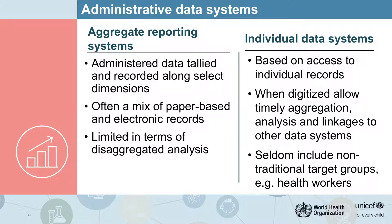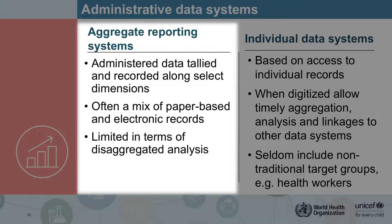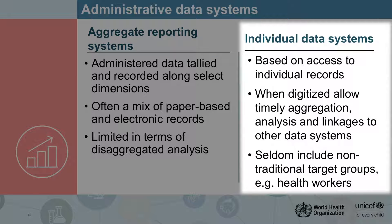We distinguish two kinds of administrative data systems. The first kind is the aggregate system that depends on tallying of recorded vaccinations and consolidated reports that are periodic and go to a central health authority through a number of intermediate levels. The other kind is the individual data system, in which personal immunization records are digitized and can often be analyzed in real time, allowing for much more detailed analysis — but they seldom include non-traditional target groups such as health workers or older adults.